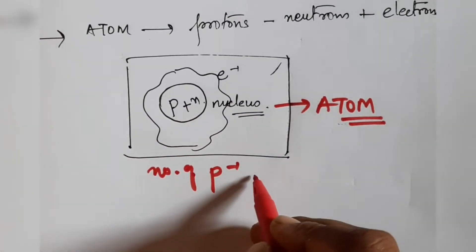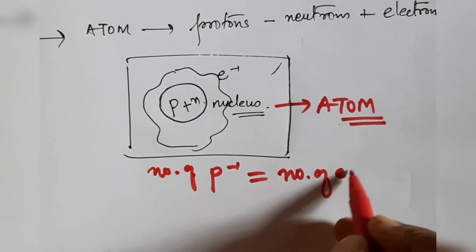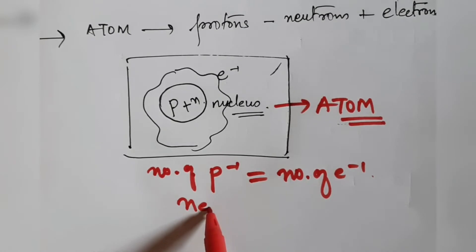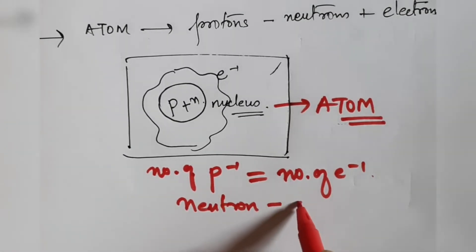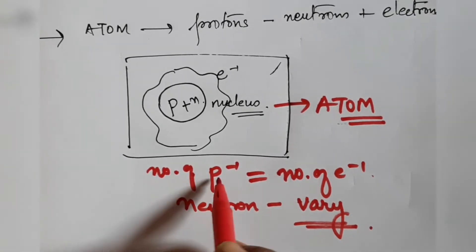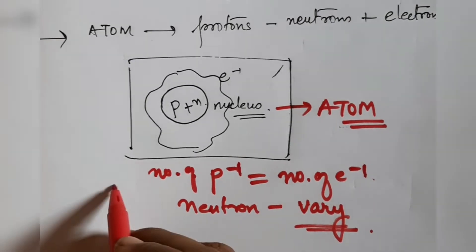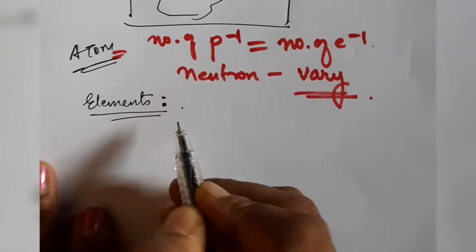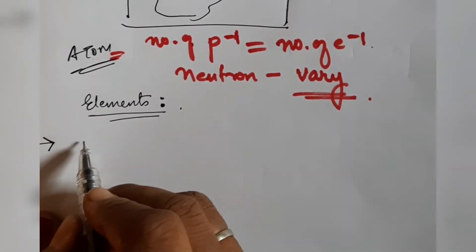The number of protons is always equal to the number of electrons in a neutral atom. The number of neutrons can vary. When the number of protons equals the number of electrons, we are dealing with a neutral element.